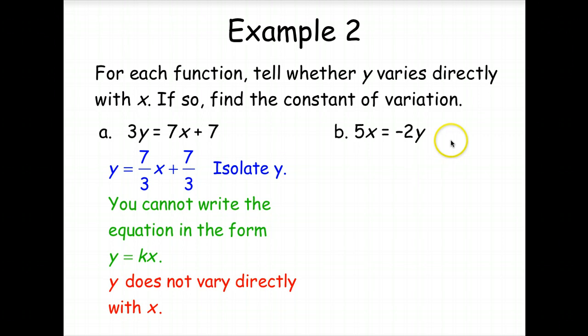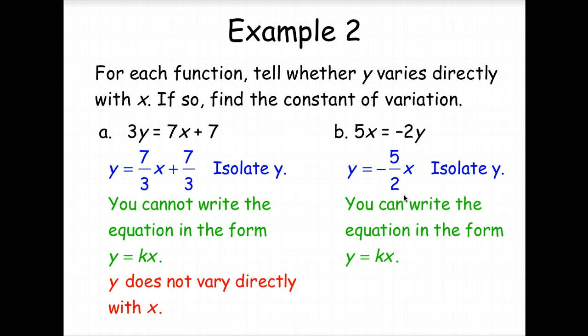So let's go over to B. We're going to isolate the Y, so we're going to divide both sides by the negative 2. This one is written in the format Y is equal to KX. So Y does vary directly with X, and K is equal to negative 5 halves. Excellent.